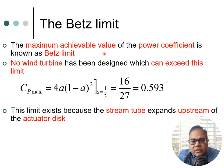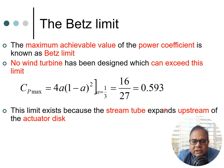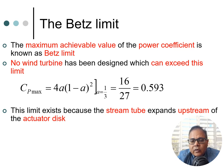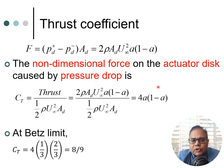This maximum achievable value of the power coefficient is known as the Betz limit. You cannot design a wind turbine that exceeds this limit, because it follows directly from the physics and mathematics of the system. Substituting a equals one-third into C_p equals 4a(1 minus a) squared gives 0.593. This limit exists because the stream tube expands upstream of the actuator disk, constraining the amount of power that can be generated under the assumptions made.